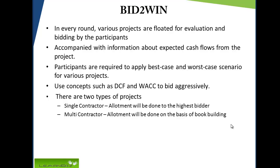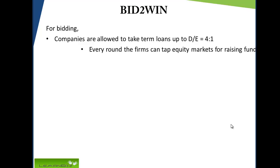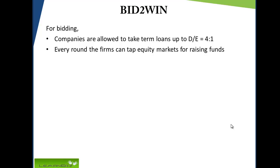Once a project is allotted, cash flows will be over different rounds. In order to bid, companies are allowed to take term loans up to a debt equity ratio of 4 to 1. Every round, the firms can tap equity markets for raising funds.